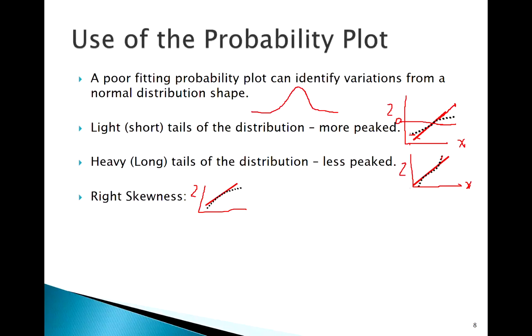Same thing on left skewness, the opposite way. We're seeing smaller z-scores here for small values of x, larger z-scores for larger values of x than we expect.